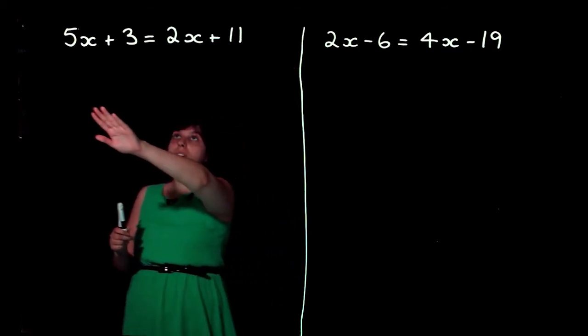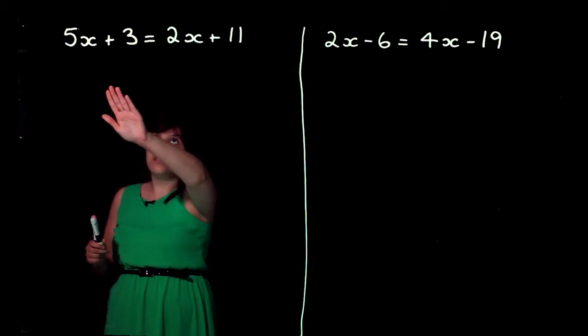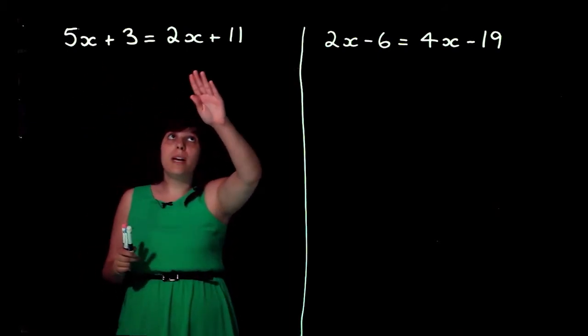So, with our first question, we've got 5x plus 3, and that equals 2x plus 11.